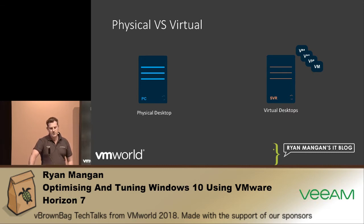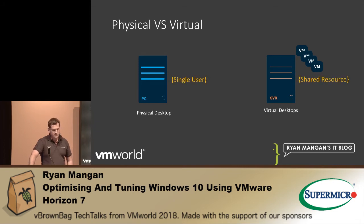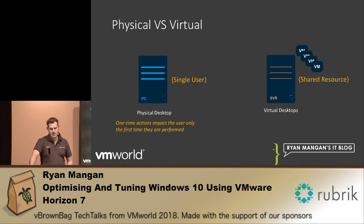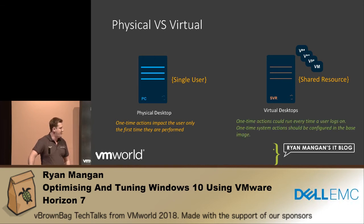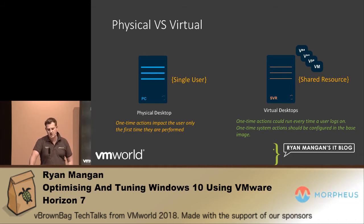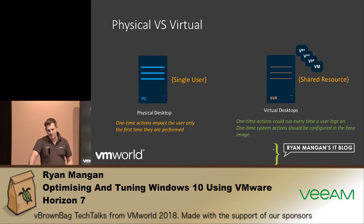When looking at these systems, it's about how you optimize but also working out capacities. With a single user on shared resources, one-time actions can impact the user on first logon, but after that the user sees improved performance. However, with virtual desktops, those same one-time tasks are often run every single time a user logs on. So if possible, you should try to ensure these tasks are included in the initial base image.